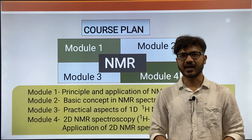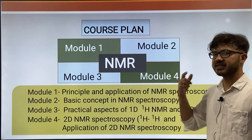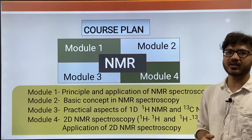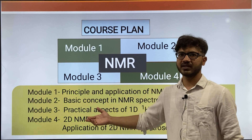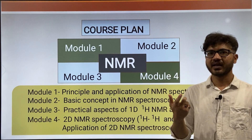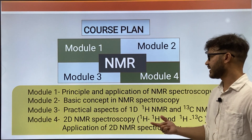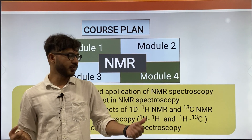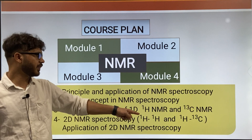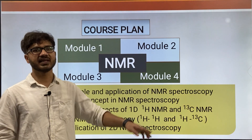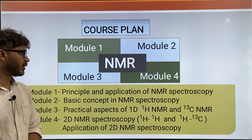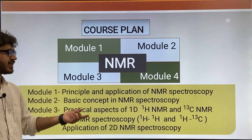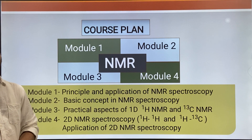In module 3, I will discuss the practical aspects of 1H NMR and 13C NMR spectroscopy. And in module 4, this is the advanced level of NMR spectroscopy. I will discuss 2D NMR spectroscopy — 1H-1H HOMO correlation spectroscopy and 1H-13C hetero correlation spectroscopy. I will also include the applications of 2D NMR spectroscopy in module 4.